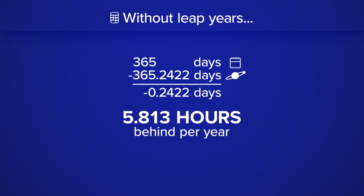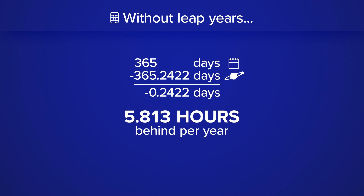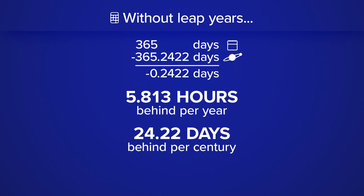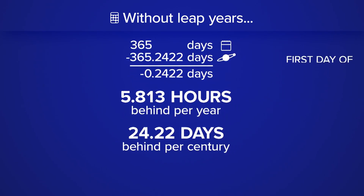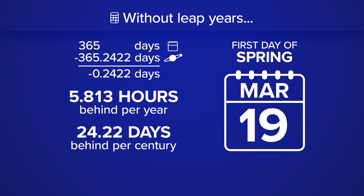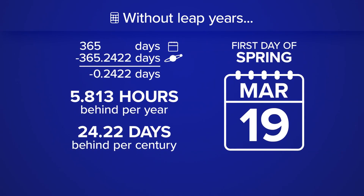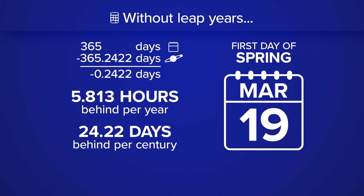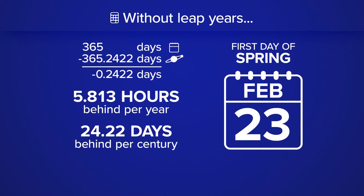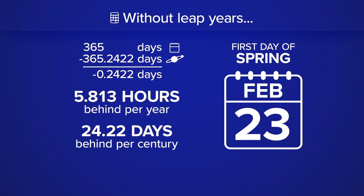While this is a small number, over the decades and centuries it would have a big impact on the calendar. In 100 years, we'd be off by 24 days. So instead of the first day of spring being March 19th, without a leap year it would be February 23rd.